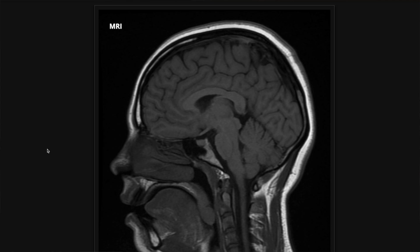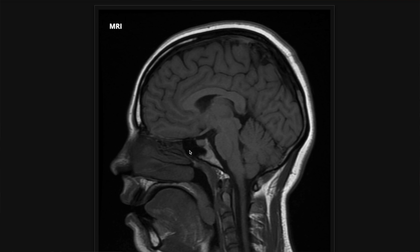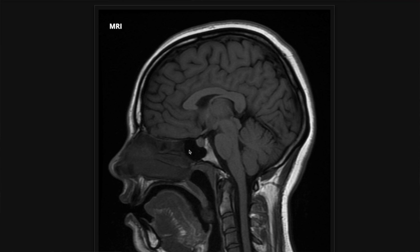There are a bunch of different sequences. The first one I'm going to start with is what I have on the screen here, and that is the T1. This is a sagittal view, so this is looking at the brain from the side of the patient. The sagittal T1 I predominantly use to look at normal anatomy. There are a few structures to point out on the midline sagittal — I'm not going to do every single one, but I'm going to do the major ones.